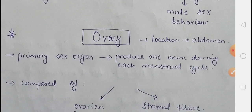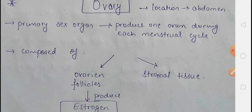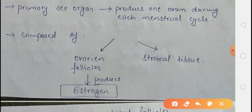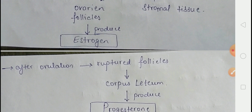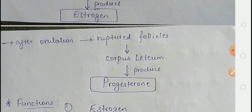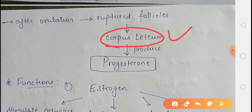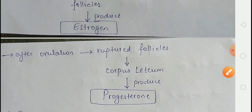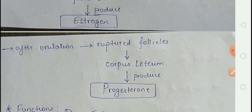Now we talk about the ovary. The ovary is the primary sex organ and produces one ovum every menstrual cycle. The ovary has two types of tissues: the ovarian follicles and the stromal tissues. The ovarian follicles produce a hormone called estrogen. When ovulation happens, the follicles rupture and convert into the corpus luteum. The corpus luteum secretes a hormone called progesterone. So the ovary has two hormones: estrogen and progesterone.